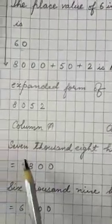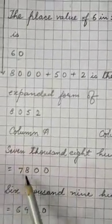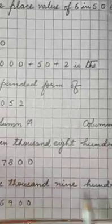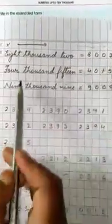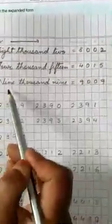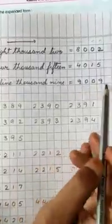Second matching. Here you see how I have done: 7800, 6900, 8800, 8002, 4015, 909.